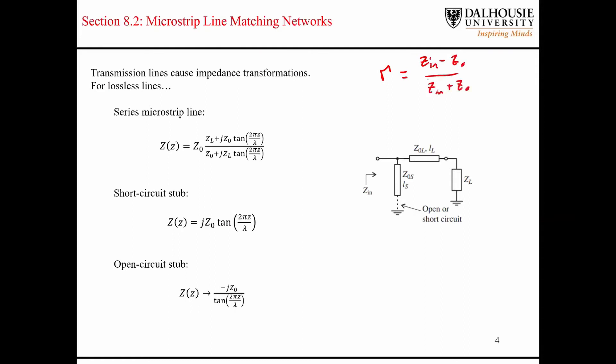The reflection coefficient is a measurement of this impedance — the difference between these two impedances — and then the other one would be this. So these five equations here are the five fundamental analytical expressions used to design microstrip lines without the aid of the Smith chart.